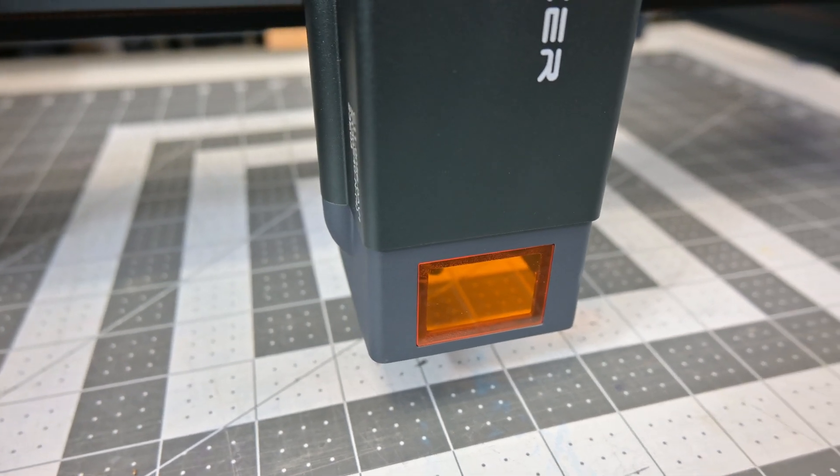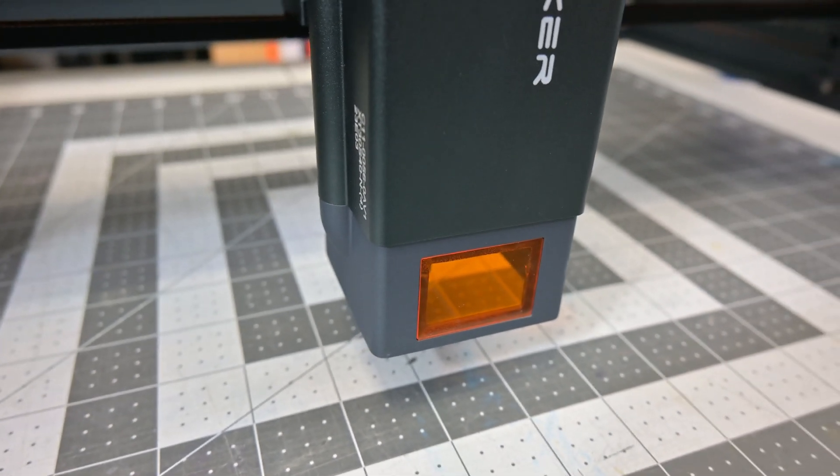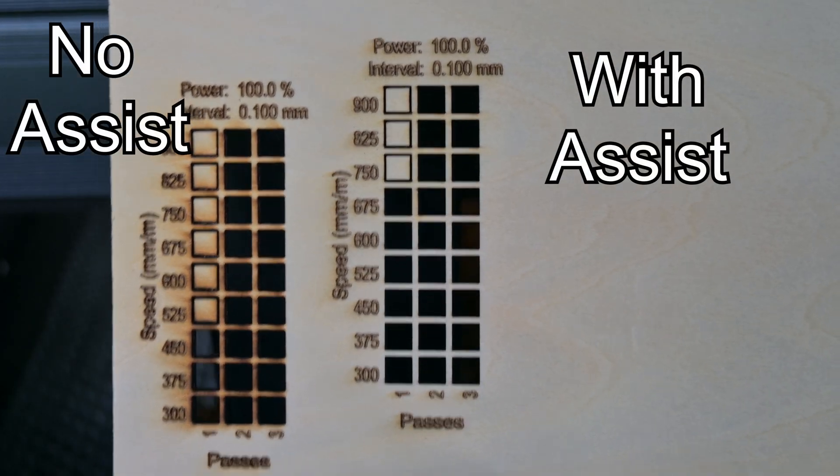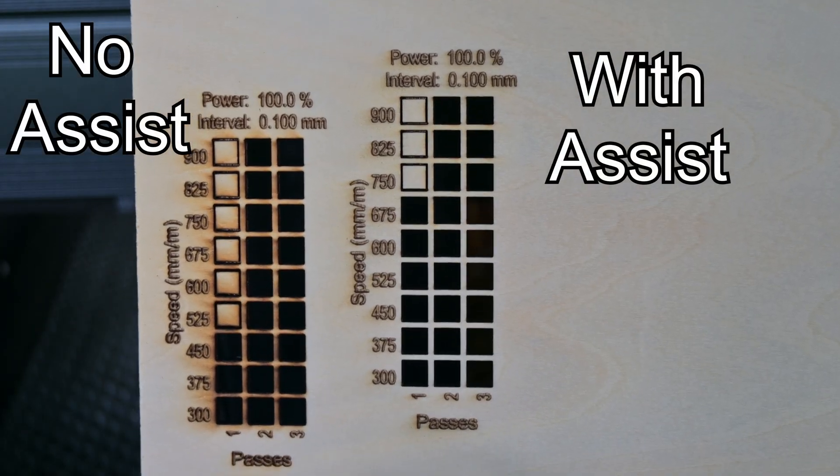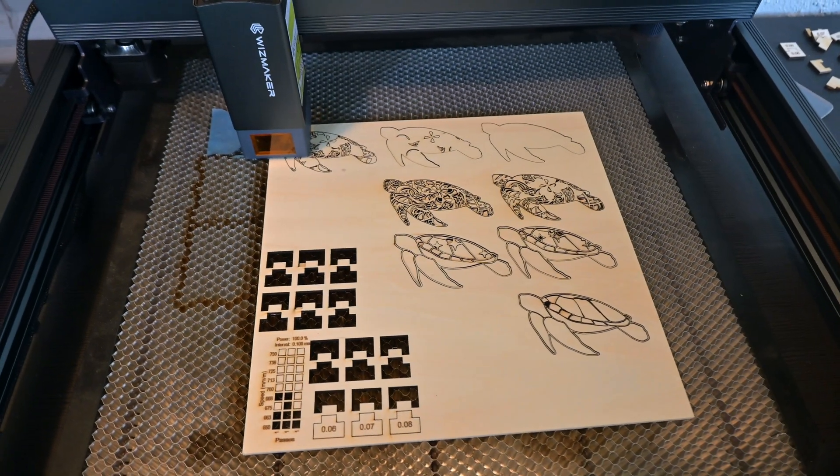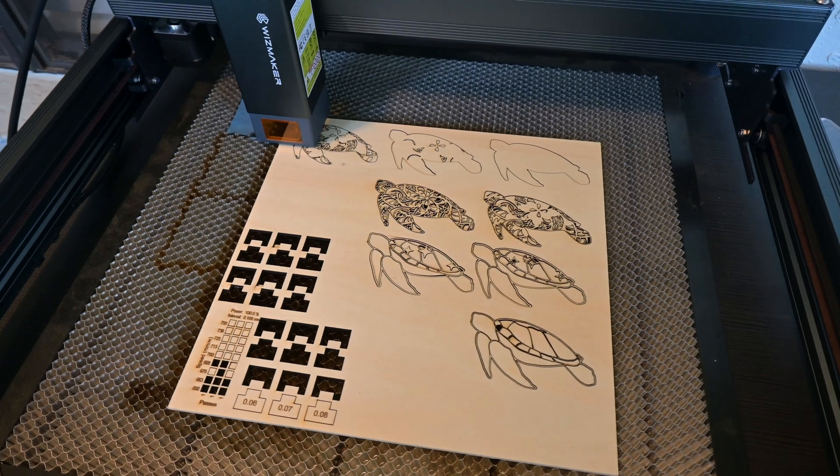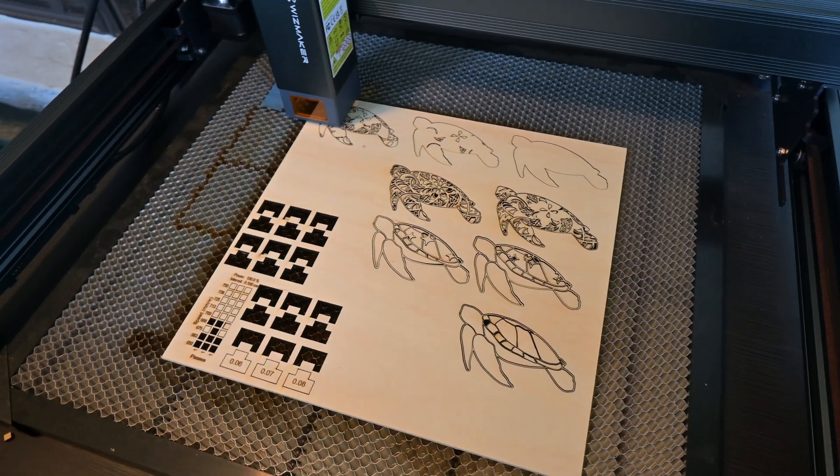Also built into the laser module is the air assist nozzle, so you can attach an air assist compressor very easily. With the power of the laser, I highly recommend using air assist to get the most out of the machine. While WizMaker sells both their own air assist compressor and honeycomb work surface, I do not have samples, so I'll be using my own set that I already had on hand.